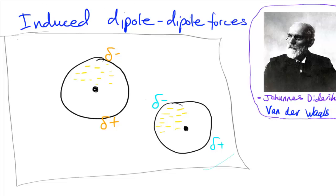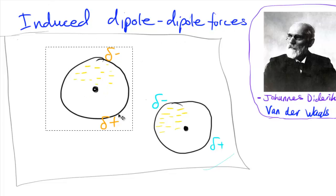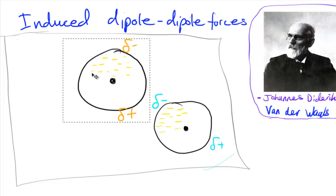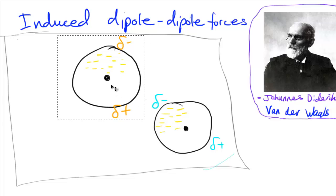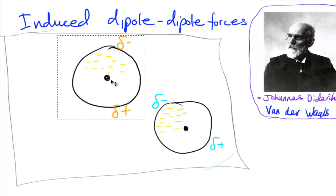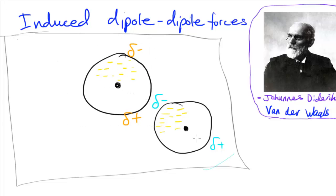After the dipole has been induced, the two atoms now have two oppositely charged regions facing each other. What's going to happen is that these two atoms are going to be attracted to each other. This attractive force is what we call an induced dipole-dipole force, and this is the basis of the van der Waals force.